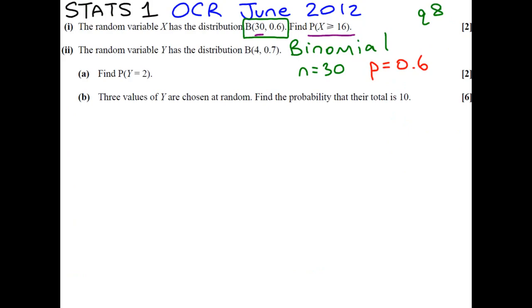Looking back at our question and moving on to part two, we've got a random variable y which has a binomial distribution B(4, 0.7). That means that we're doing four trials and the probability of a success is 0.7. Part A asks us, what's the probability that y equals 2? Well, if you've got two successes, that's going to be your success probability squared. And obviously we're doing four trials, so that means you must have had two failures.